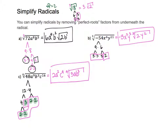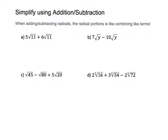Let's try adding and subtracting radicals. When adding and subtracting radicals, it's like combining like terms. Remember with exponents: for 3x² plus 2x², these are like terms because they're both x², so we add the coefficients to get 5x². Notice the x² stays the same — we only add the coefficients. We'll use that same approach to combine radicals.